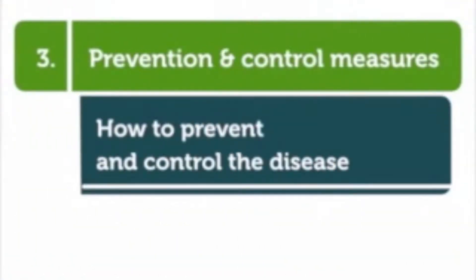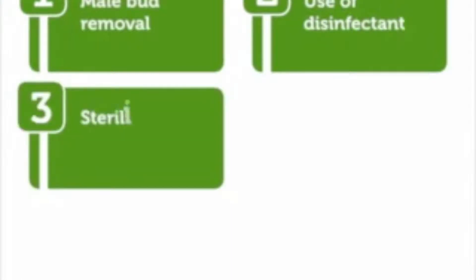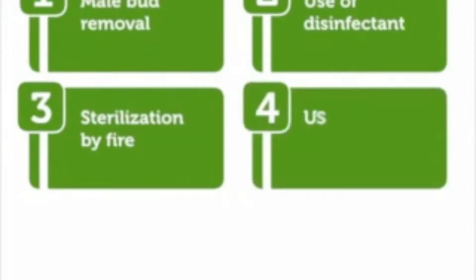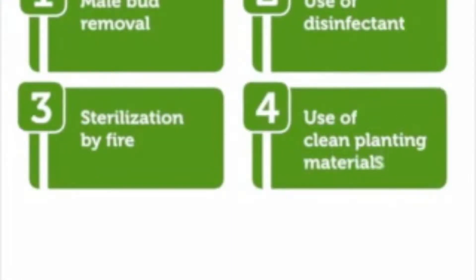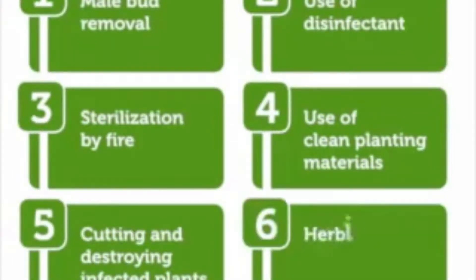Prevention and control of the disease is done through male bud removal, use of disinfectant, sterilization by fire, use of clean planting materials, cutting and destroying infected plants, and herbicide application.